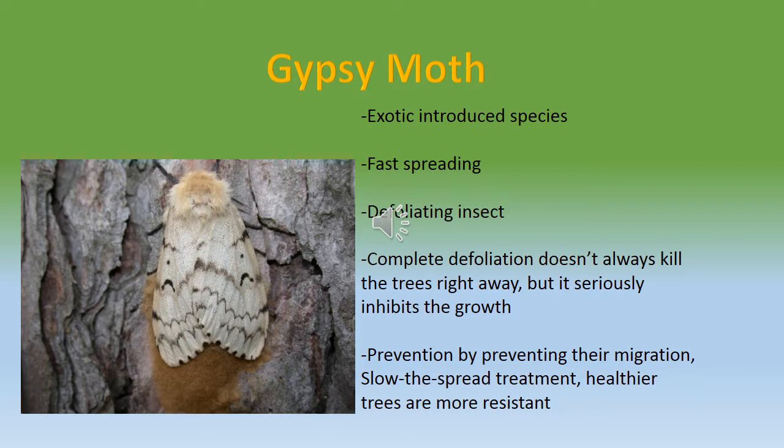When these insects eat the leaves, the trees have to continue to rely on stored starches before more leaves grow back. Since the leaves are annuals, they have to wait until the next year to regain leaves while barely surviving on stored starches. One defoliation doesn't necessarily kill the tree, but it seriously inhibits growth.